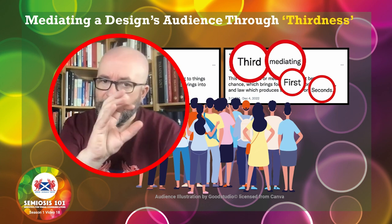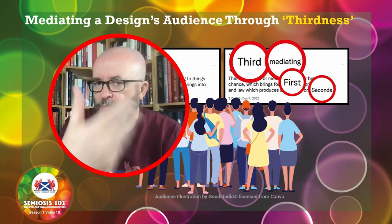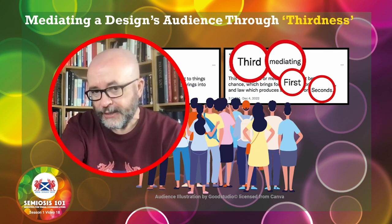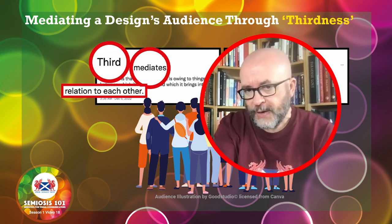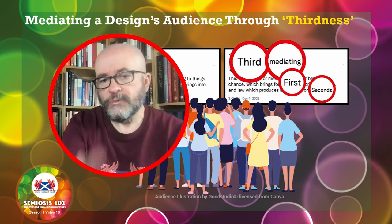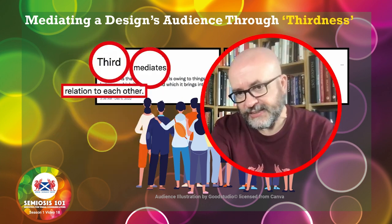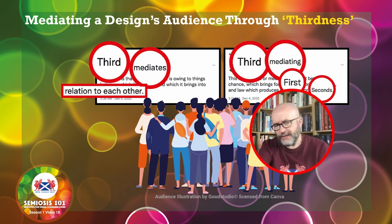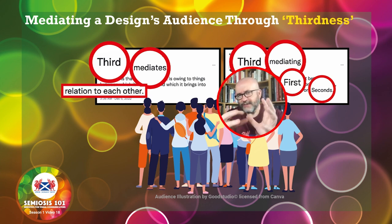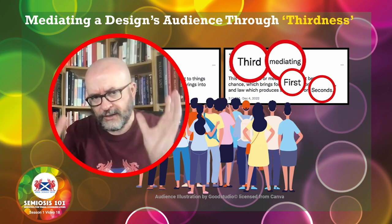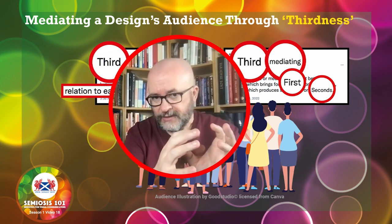Think of any logo. Any logo is at this level of thirdness — of mediation — because all the elements that make up that logo are mediated by the audience and the branded company to say: when you see this, it means that. The white swoosh on a red background means Coca-Cola, or five coloured rings together means the Olympics. That is mediated — we come to accept that when we see that, it is this. When we see this, it is now that. From 'this is that' to 'when we say this, it means that.'